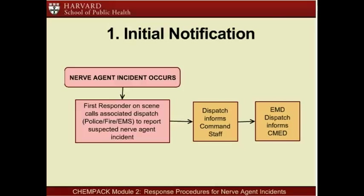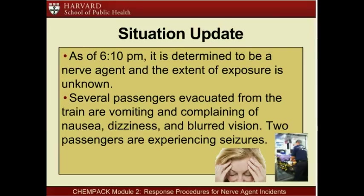The initial notification of the nerve agent incident will occur when the first responder on scene calls their associated dispatch—either law enforcement, fire, or EMS—to report the suspected nerve agent incident. Dispatch informs their command staff and then informs CMED. As of 6:10 p.m., it is determined to be a nerve agent and the extent of exposure is unknown. Several passengers evacuated from the train are vomiting and complaining of nausea, dizziness, and blurred vision. Two passengers are experiencing seizures.